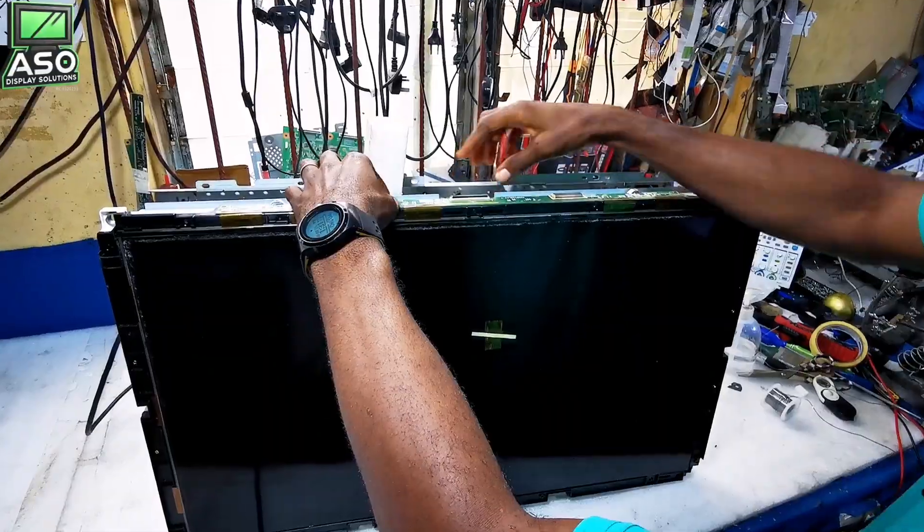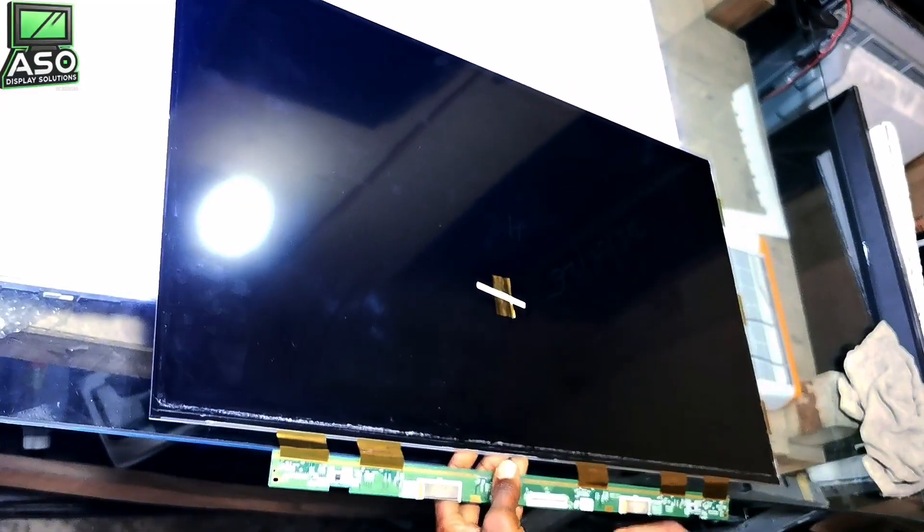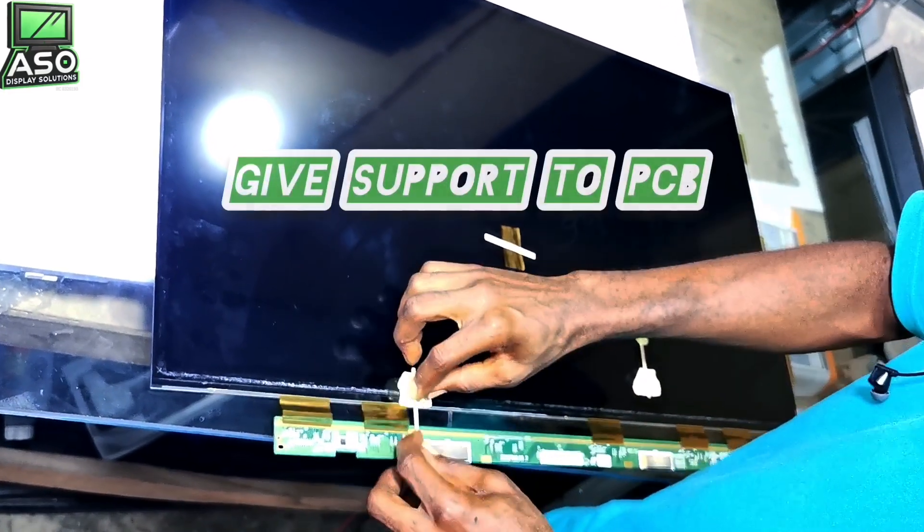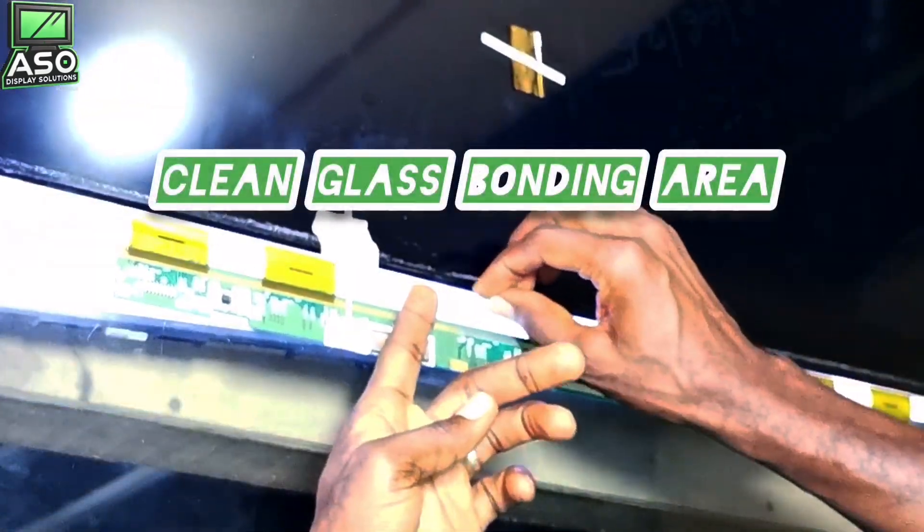As a last resort, this panel's COF is removed and prepared for bonding. What do you think? Does it make sense to do the repair this way? Please leave your thoughts in the comments.